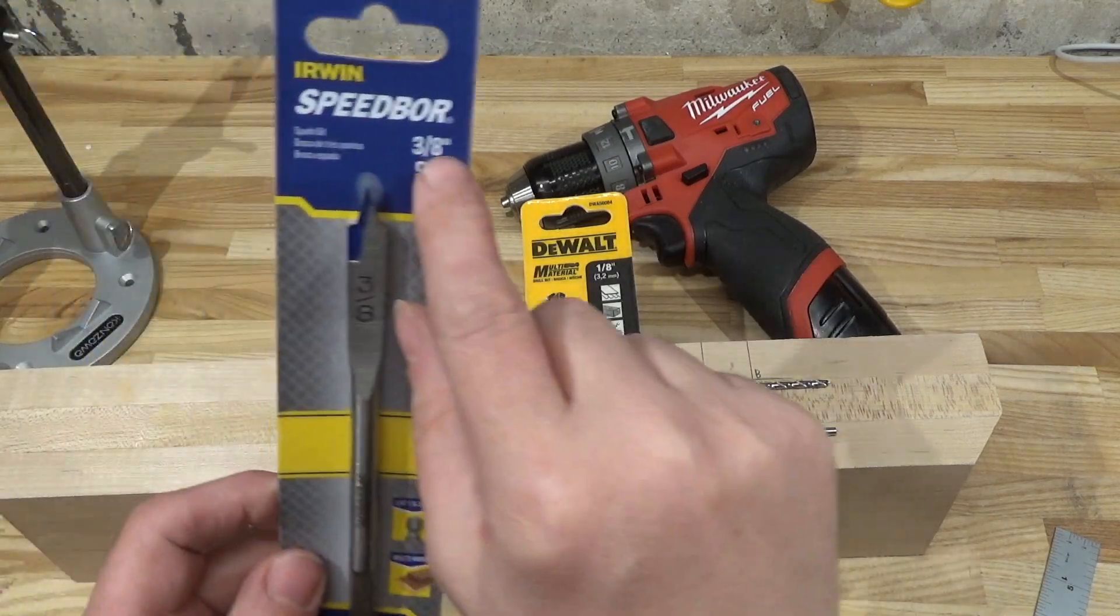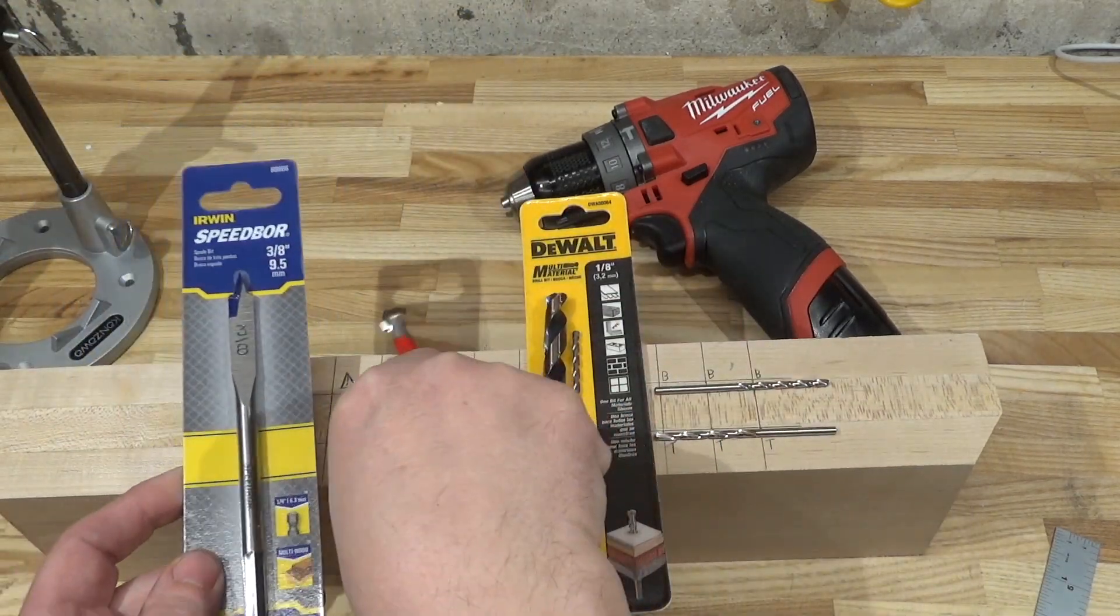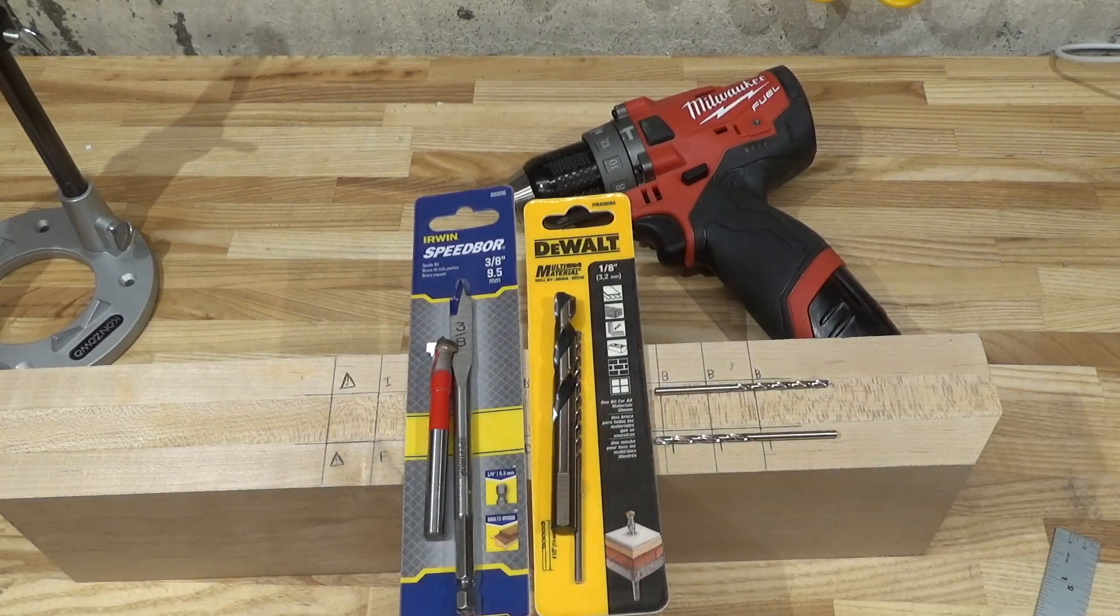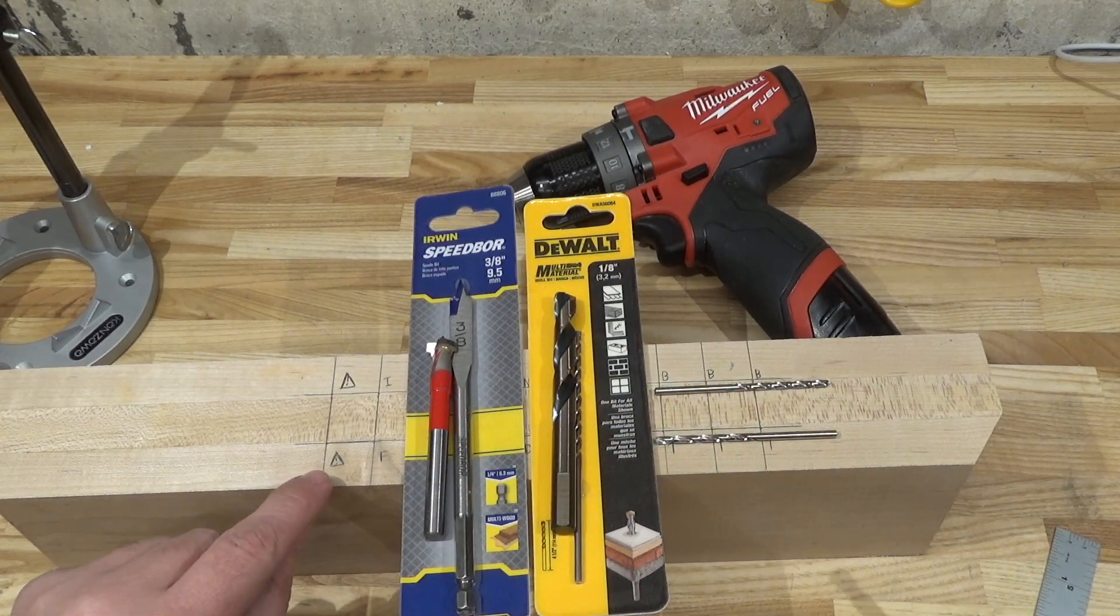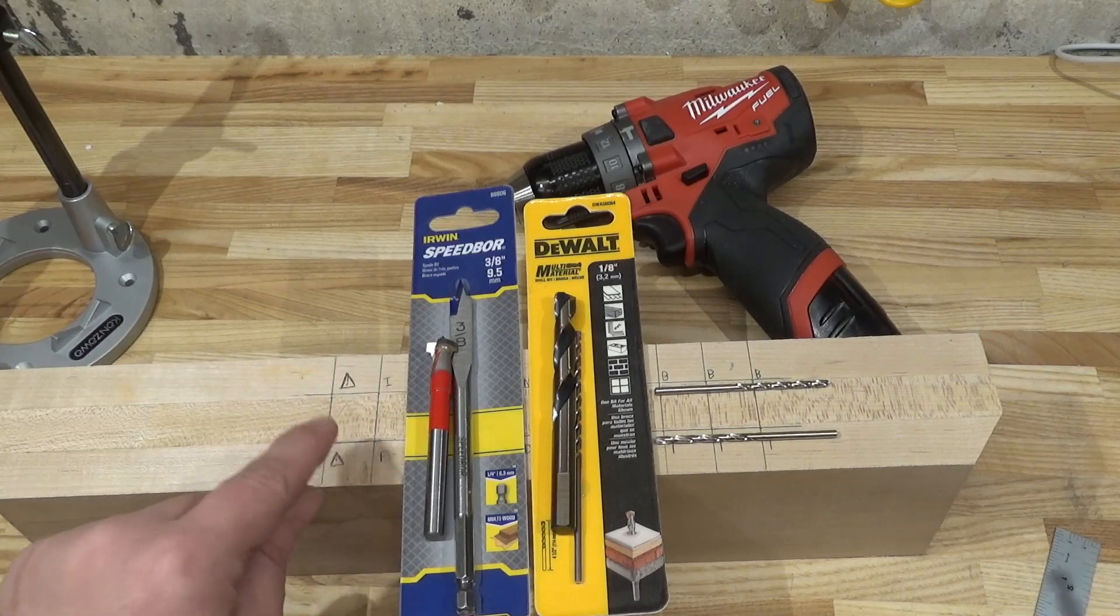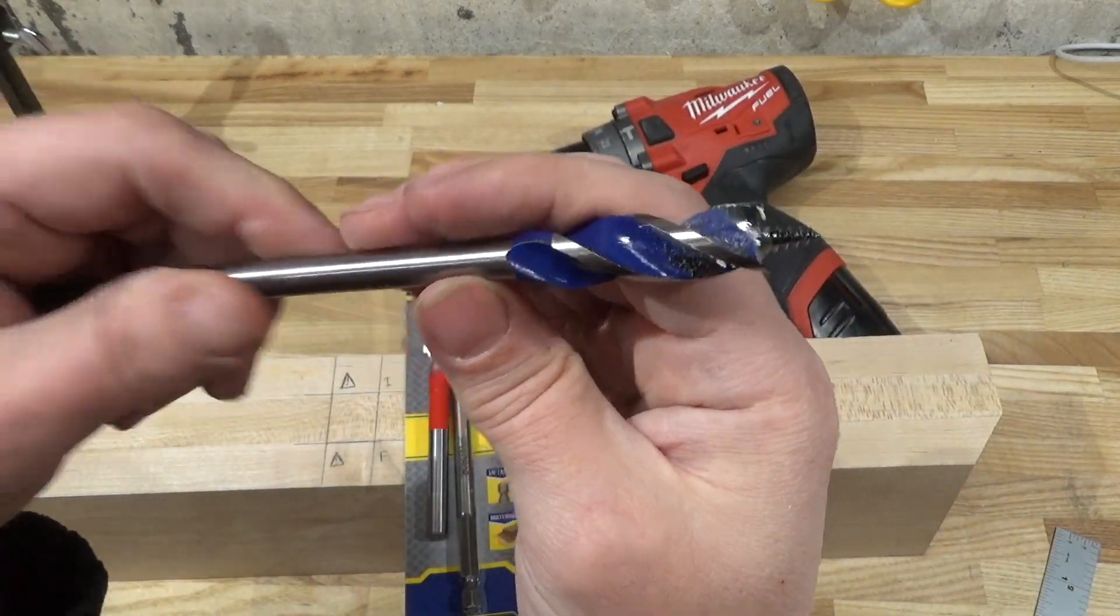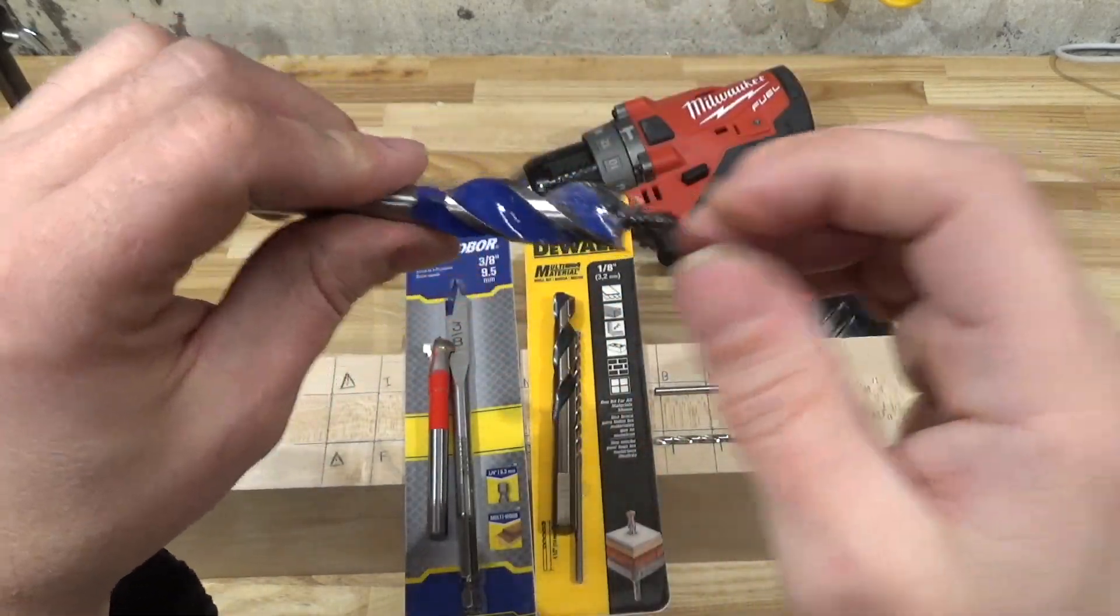So I for Irwin will go with those three holes, and we got a three-eighths inch bit, which would be comparable to the Norseman twist bit.